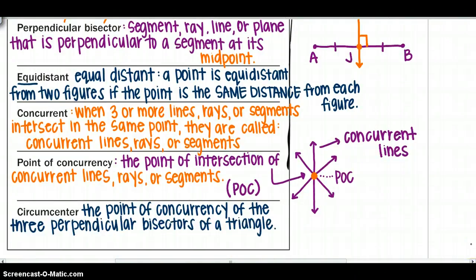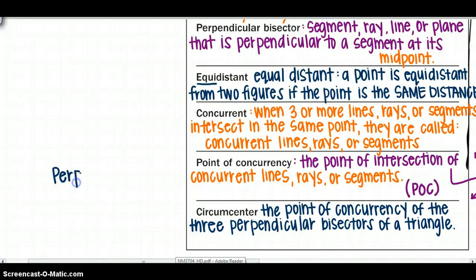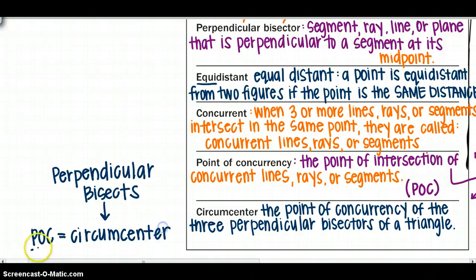Another new word we will use in this section is the circumcenter: the point of concurrency, or POC, of the three perpendicular bisectors of a triangle. We're going to use the circumcenter to figure out things with the triangle. The perpendicular bisectors of a triangle have their point of concurrency called the circumcenter, which will be important as we cover the next few sections.